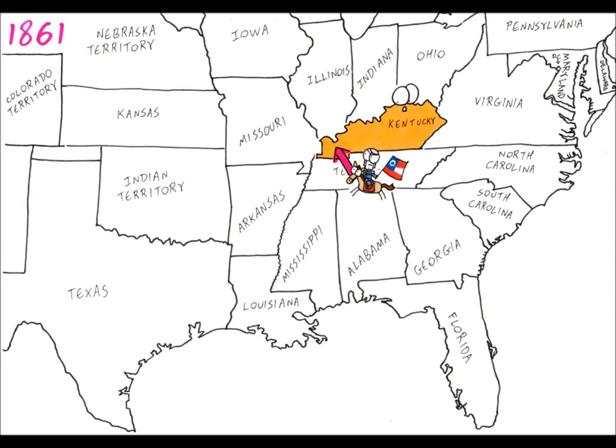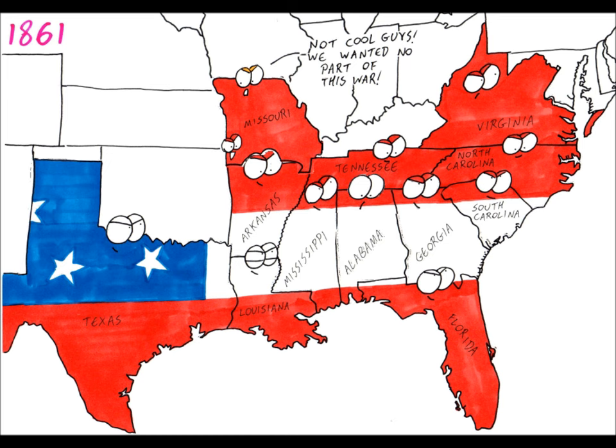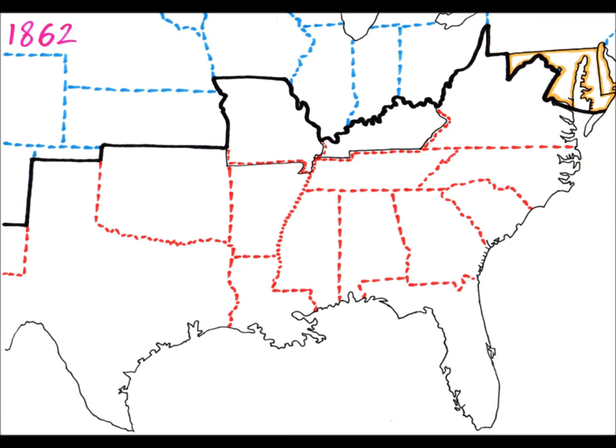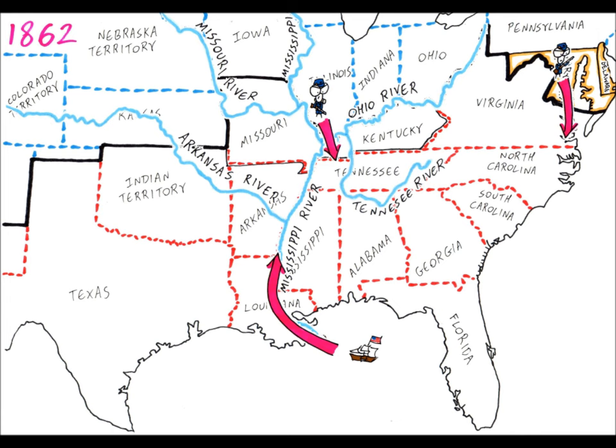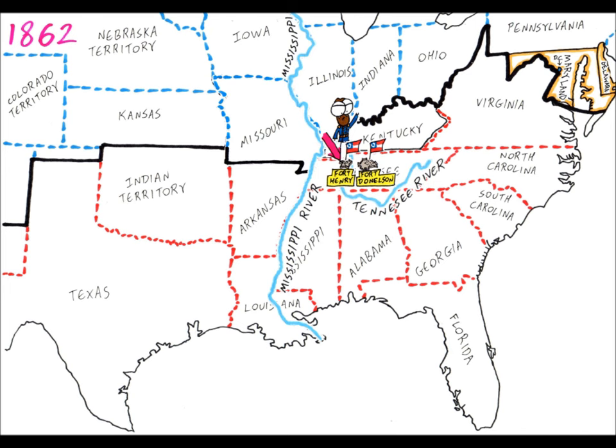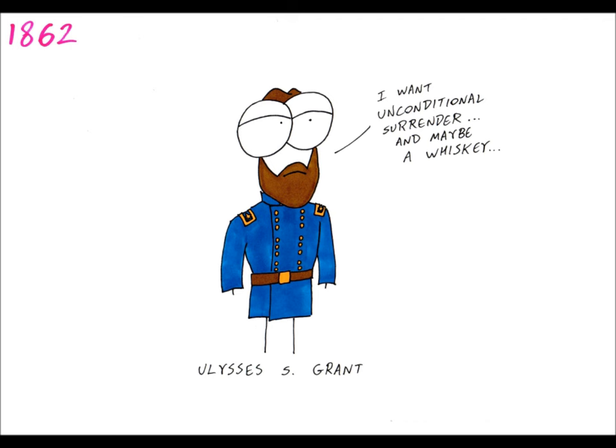Kentucky ended its neutrality in favour of the Union when it was invaded by Leonidas Park's Confederacy forces. At the end of 1861, splinter governments of Missouri and Kentucky joined the Confederacy, but held little sway in those states. In 1862, the Union forces chose to move in on multiple fronts through Virginia, Kentucky and up the Mississippi. In Missouri, Confederacy forces were driven out early. Ulysses S. Grant pushed through Kentucky, capturing Fort Henry and Fort Donaldson, opening up the Tennessee River.